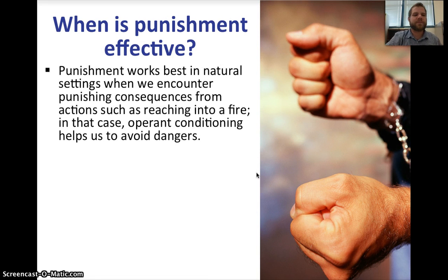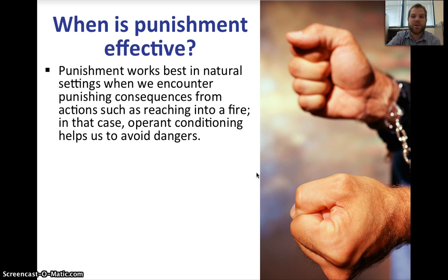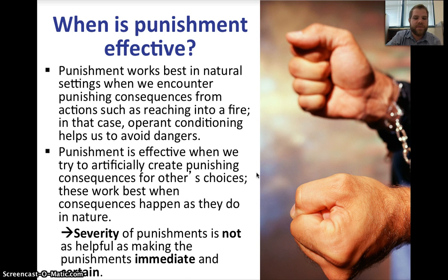So when is punishment effective? It actually works best in natural settings when we encounter punishing consequences from our actions, such as reaching into a fire. In that case, operant conditioning also helps us avoid danger — we're punished by the world through pain and hardship. Punishment is also effective when we try to artificially create punishing consequences for other choices. These work best when the severity of punishment is not as important as making the punishments immediate and certain.